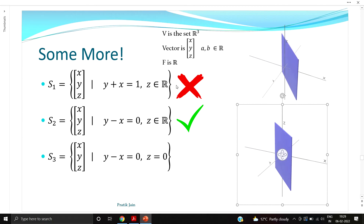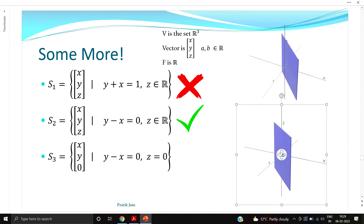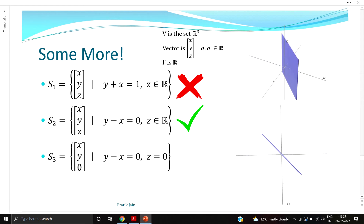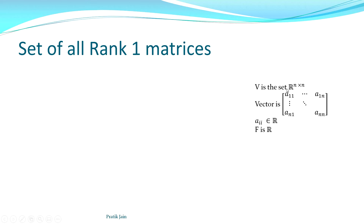Similarly, if we add the restriction z = 0 to S2, we get points of the form (x, y, 0) where y = x — which is a line in 3D. Since a line passing through the center is a subspace, this is also a subspace. So: S1 (the tilted plane) is not a subspace; S2 (the plane through the origin) is a subspace; and the line (S2 with z = 0) is also a subspace.